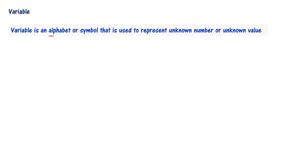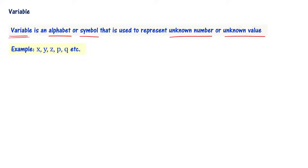A variable is an alphabet or a symbol that is used to represent an unknown number or unknown value. Alphabets and symbols are used as variables to represent unknown numbers or unknown values. For example, variables are used to represent unknown numbers or unknown values.